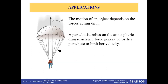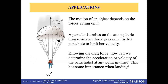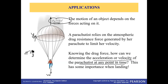One application: a person descends using a parachute. The forces acting on the person are weight w acting downward, and drag force Fd acting upward, which lowers the speed at which the person falls. Knowing the drag force, we can determine acceleration or velocity at any point in time by applying sigma Fy equal to m times ay. Once we have the acceleration, we can calculate velocity and position.